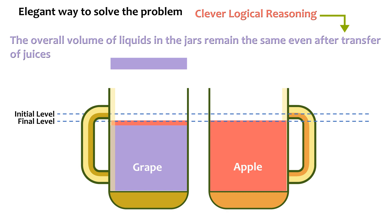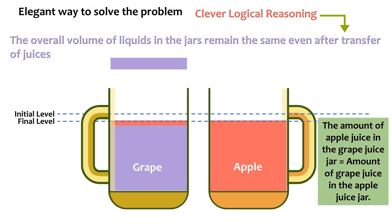And this extracted grape juice must have filled the space created by moving of the apple juice from the apple juice jar. This is to say, there is as much apple juice in the grape juice jar as much grape juice in the apple juice jar.